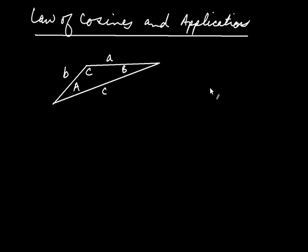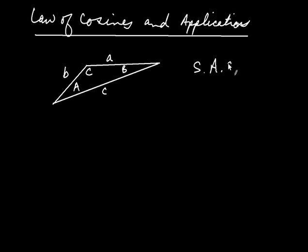Here we're going to talk about the law of cosines and some applications. We've been solving triangles, and when you don't have a right triangle, you need something other than the definitions of the trig functions. We saw how law of sines gets used. Law of cosines applies in the two situations that law of sines doesn't: when you have side-angle-side, or when you have side-side-side — that is, all three sides known and you want to find the angles, or two sides and the angle between them.